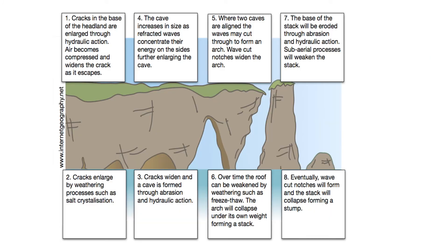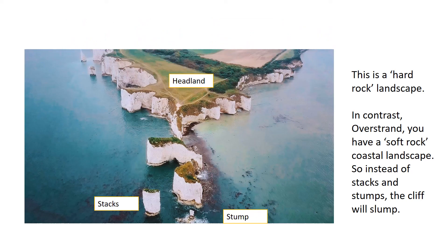You can pause this slide to recap those processes. In summary, Old Harry Rocks is a case study of a hard rock landscape where stacks and stumps are formed by processes of erosion such as hydraulic action and abrasion. In contrast, Overstrand — where we looked at coastal management — has a soft rock coastal landscape. The cliffs erode so fast that you'd never form a stack or a stump; instead, the cliff will slump.